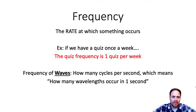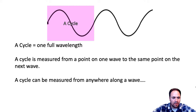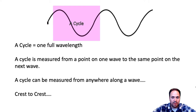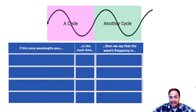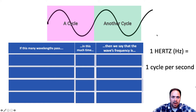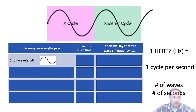Frequency describes how many wavelengths occur every second. A cycle is equal to one full wavelength, and a cycle can be measured from a point on one wave to the same point on another wave — from crest to crest, trough to trough, or anywhere in between, as long as both points are the same position on each wave. We refer to cycles per second using the unit hertz, so one hertz equals one cycle per second.